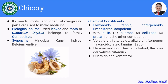Mainly Chicory comprises approximately 68% of inulin, which has health benefits. Then around 14% of sucrose, 5% of cellulose, 6% of protein, and 3% of other compounds. So, mainly Chicory comprises inulin, which shows the health benefits.